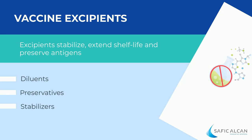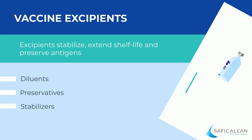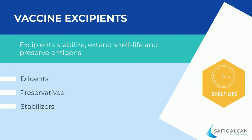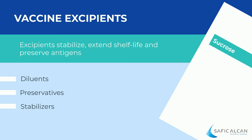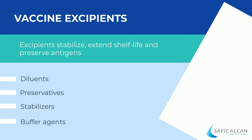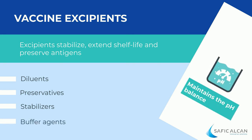Stabilizers prevent chemical reactions from occurring inside the vaccine and prevent the vaccine components from attaching to the vaccine vial. Stabilizing agents help maintain the quality of the vaccine during its lifetime. We can use sugars like sucrose to improve viscosity, as well as amino acids, gelatin, and proteins. Buffer agents are used to maintain the pH balance for the vaccine as it approaches human pH.